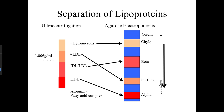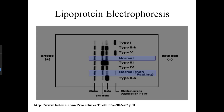Ultra-centrifugation separates lipoproteins with chylomicrons on top, followed by VLDL, IDL, LDL, and HDL. These can then be run on agarose electrophoresis to separate the different fractions. Lipoprotein electrophoresis can be reviewed to identify where each band migrates.